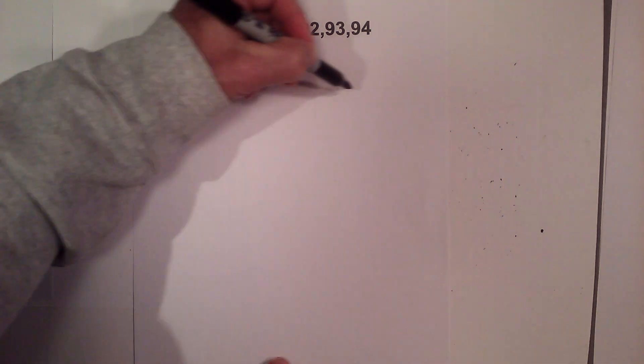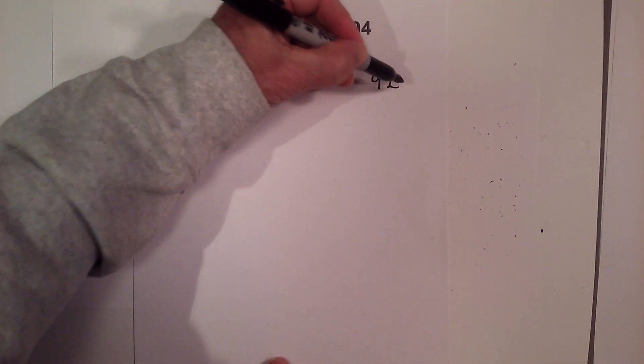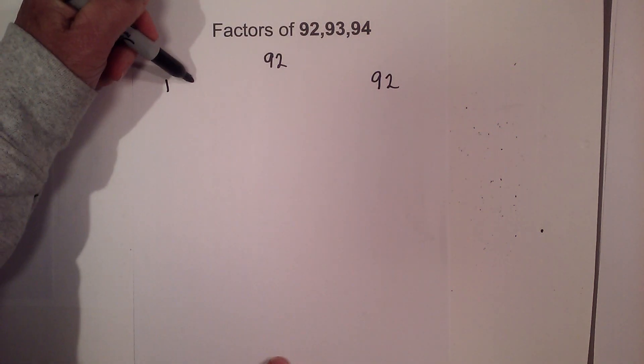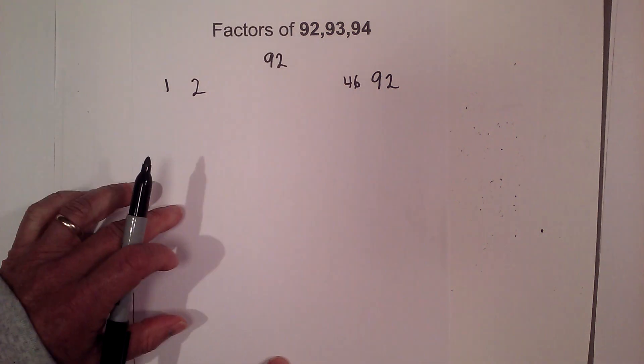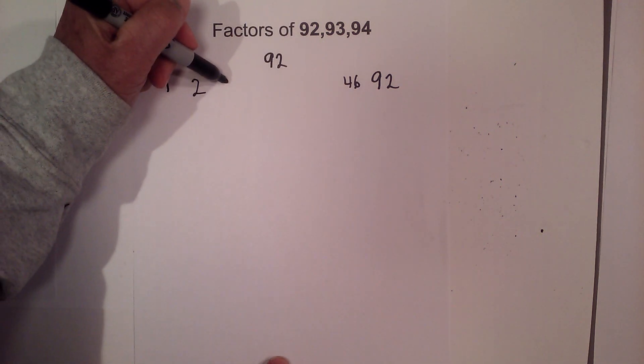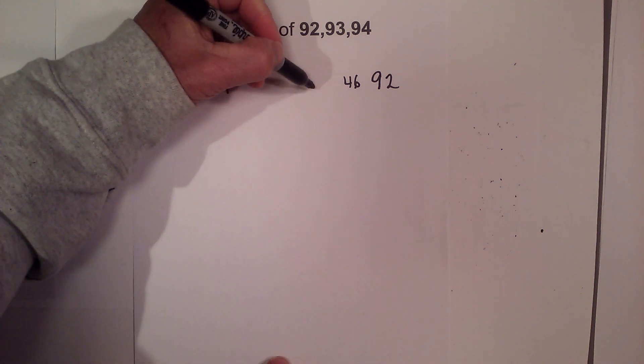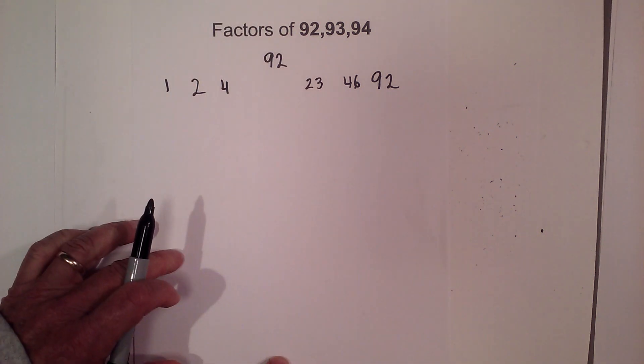So let's begin with 1 times 92 and then 2 times 46 equals 92 and then 4 times 23 equals 92.